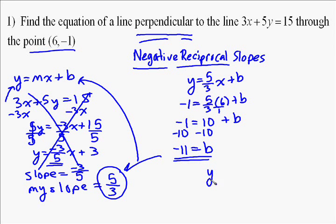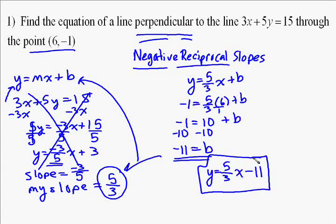So your method again is find the slope of the original line, take the negative reciprocal of it, and then take the slope and the point and use y equals mx plus b to find the final equation of the line.